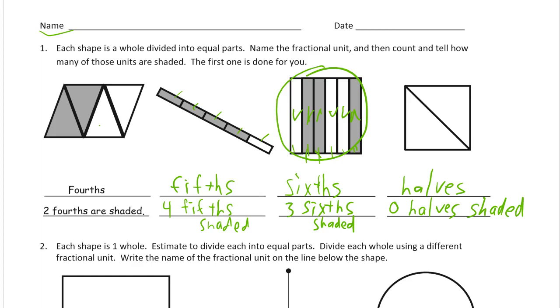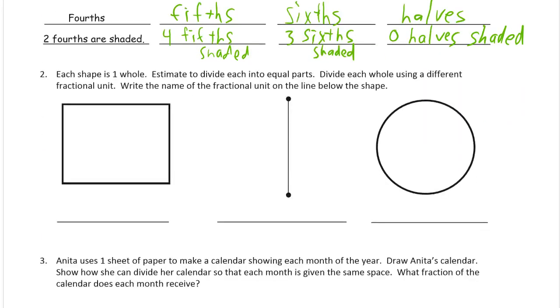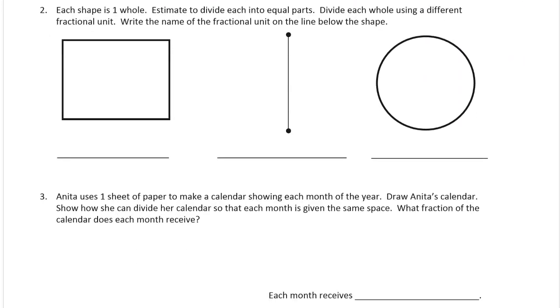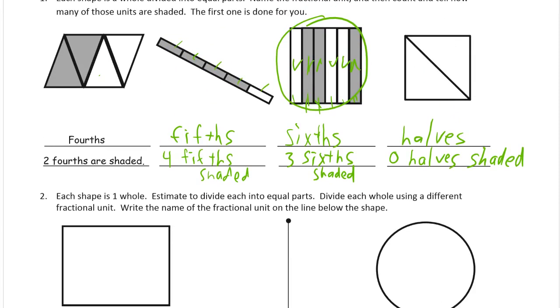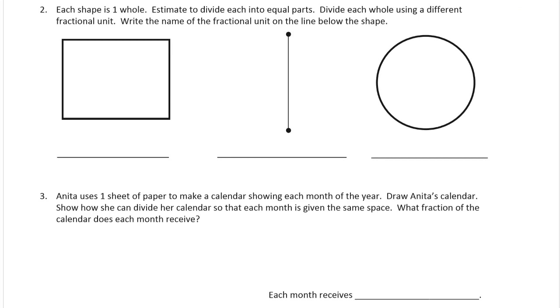You'd look at how many equal parts there are first, and then you count how many of them are shaded. So we're looking at sixths, and there's three of the sixths are shaded. You have to know how many parts there are to know what the fractional unit is. And it's either fourths, or fifths, or sixths, or halves in that first exercise.